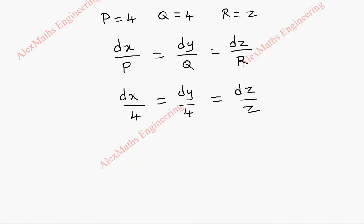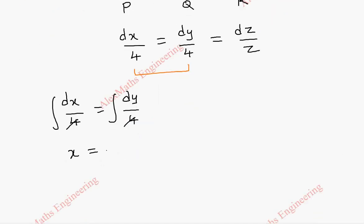Now grouping the first two terms we get dx by 4 equal to dy by 4. We integrate on both sides. We can cancel 4. On integration we get x equal to y plus c1.